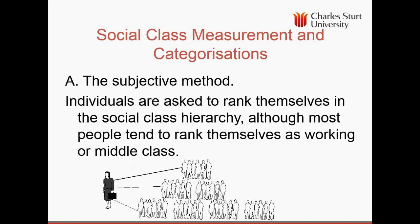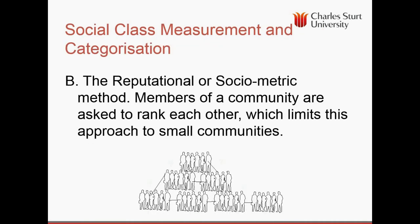There are a number of ways of measuring social class. One is the class consciousness or subjective method, where we ask people to rank themselves in the social class hierarchy — although most people in Australia tend to rank themselves as middle or working class. A more accurate approach is the sociometric method, where in a small society such as Bathurst, Orange, or a small country town, we ask people to rank each other. This is often a very good measure of social class within a small group, but becomes problematic for large cities.